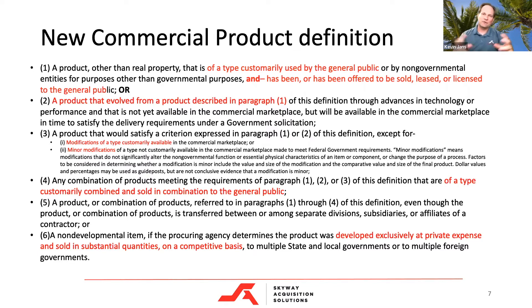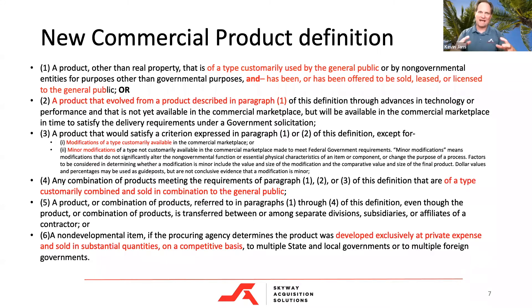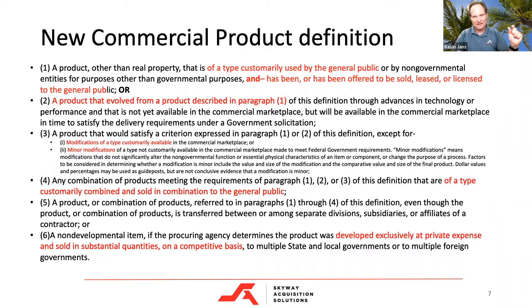Paragraph four covers something that combines paragraphs one, two, and three and is of a type customarily combined. In other words, if in the private sector they buy it in bulk, and the general public buys it in bulk, it's a commercial item — even if they don't buy it individually the way the government might.